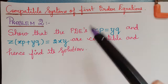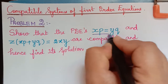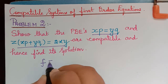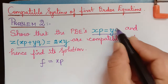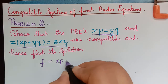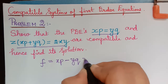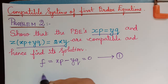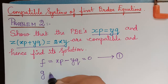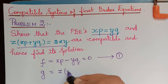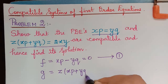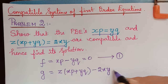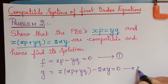In order to prove they are compatible, we will take the given equations as functions. Let the function f be equal to xp minus yq = 0 — let us mark this as equation 1. Similarly, let the function g be equal to z(xp + yq) minus 2xy = 0 — let us mark this as equation 2.